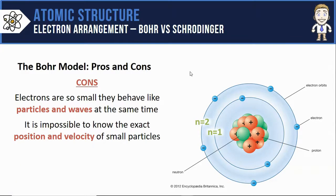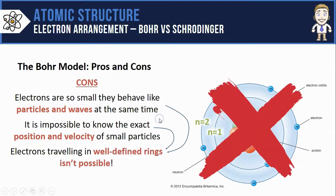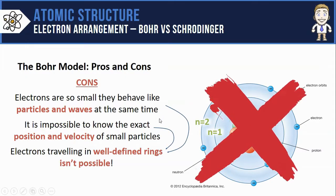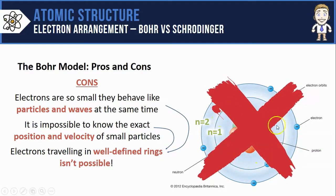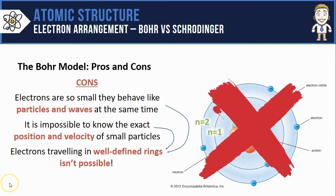The point of both of these concepts is that if electrons aren't really just particles but are also part wave, and if you can never know the exact position or speed of an electron, what does this mean for the Bohr model? Pretty much it means it's almost impossible to place electrons in these very well-defined rings like Bohr had them.